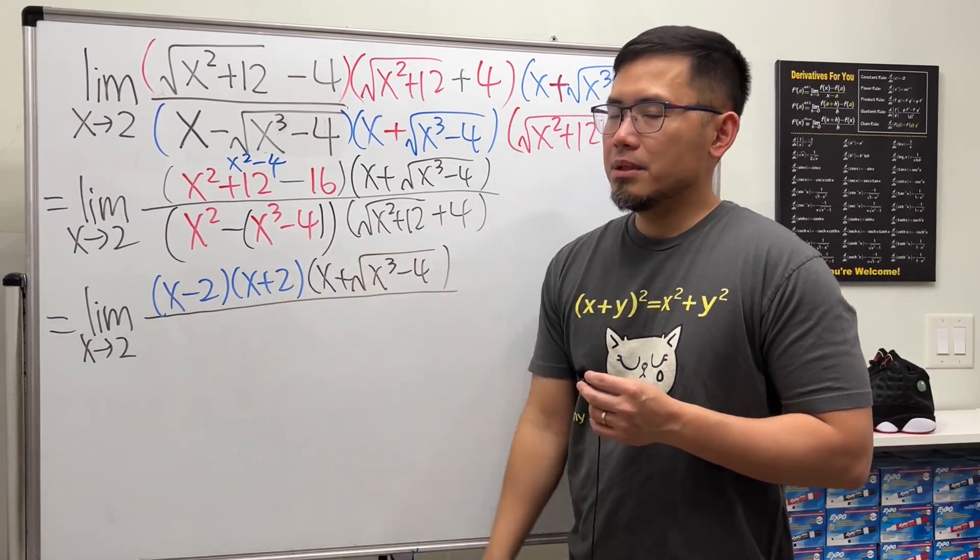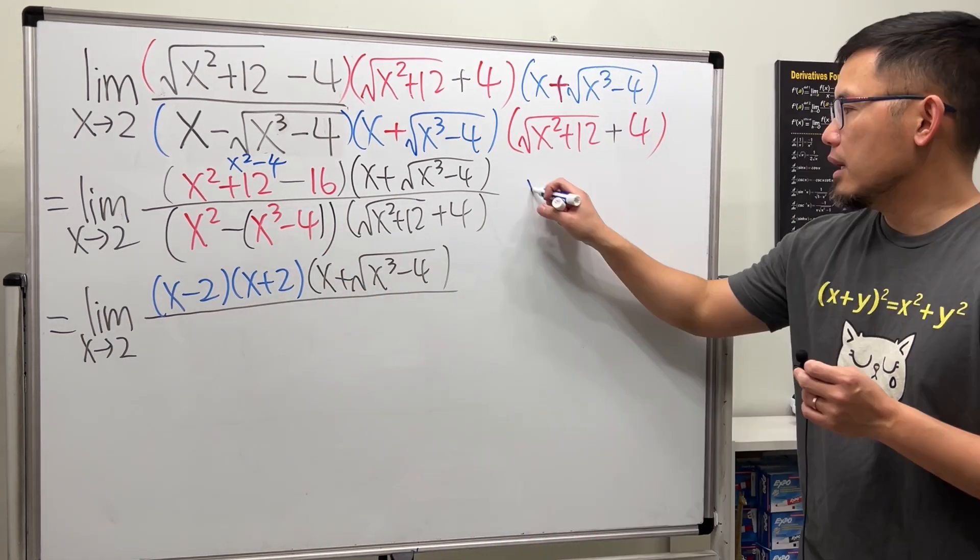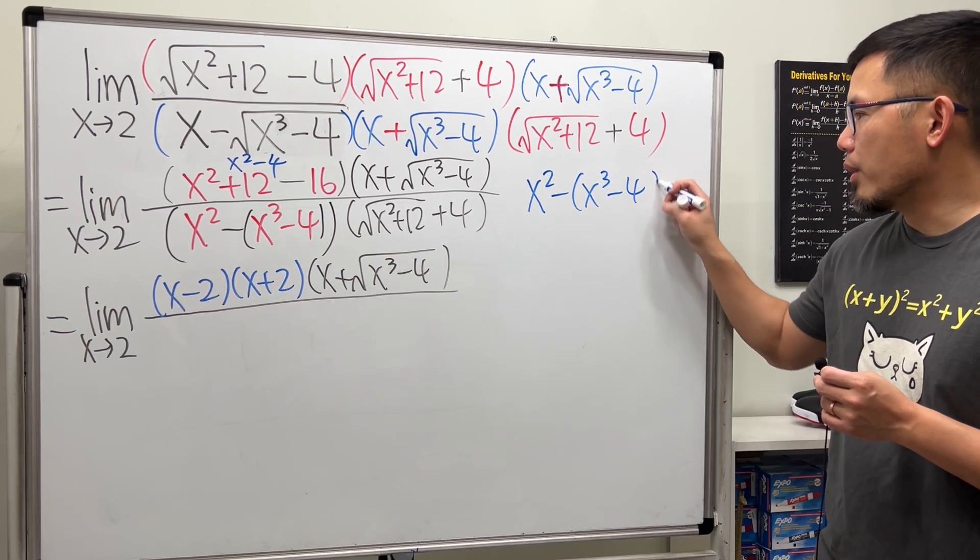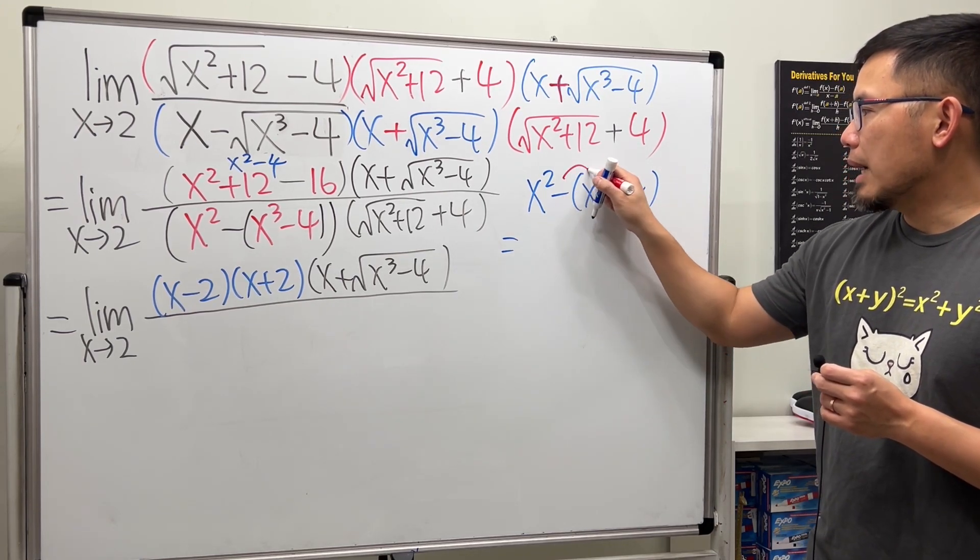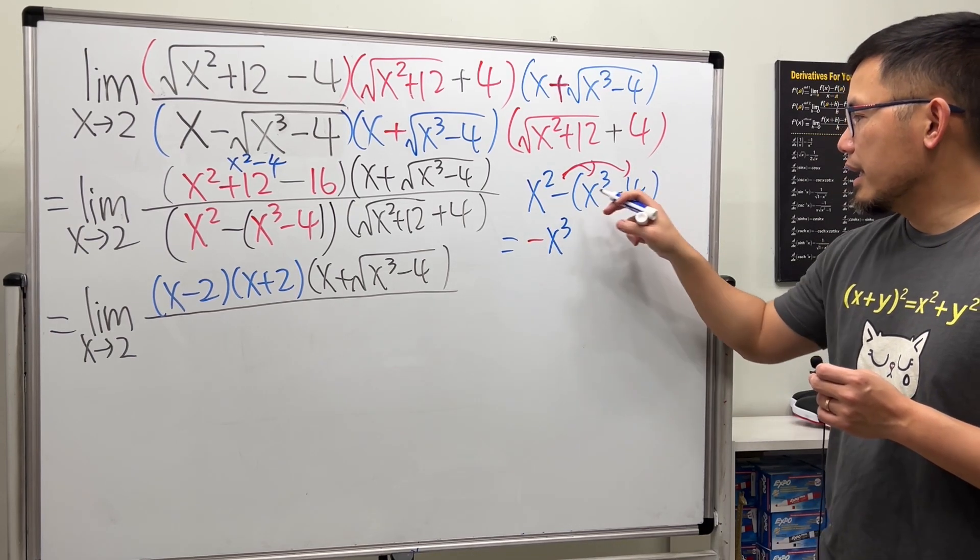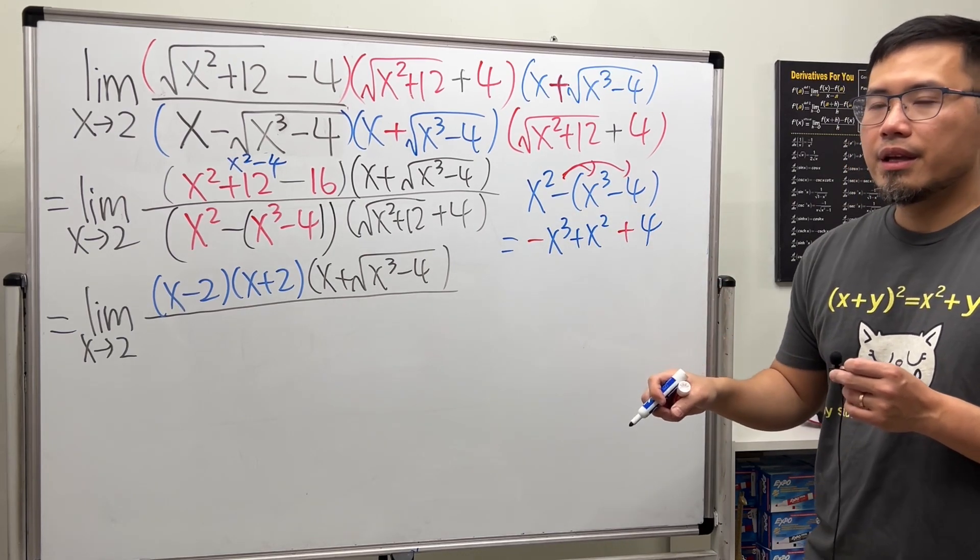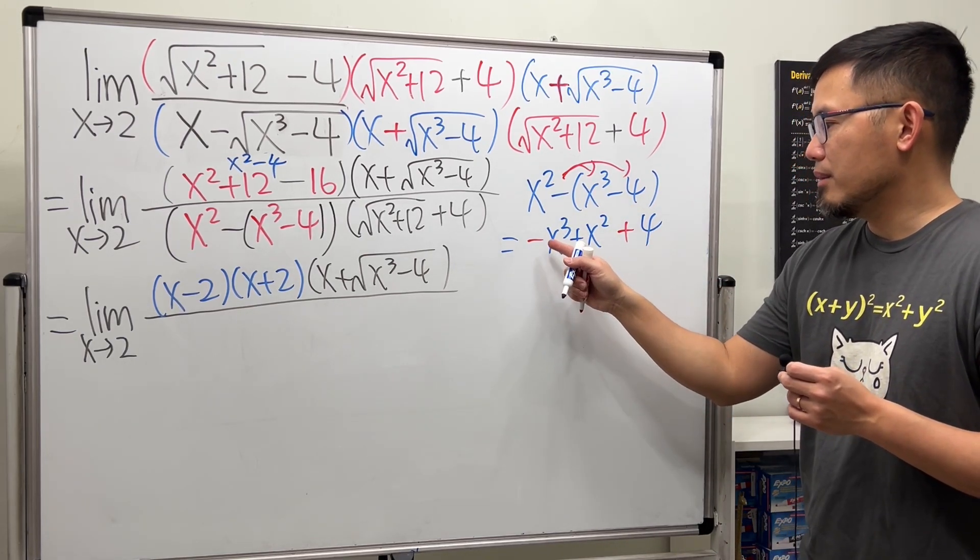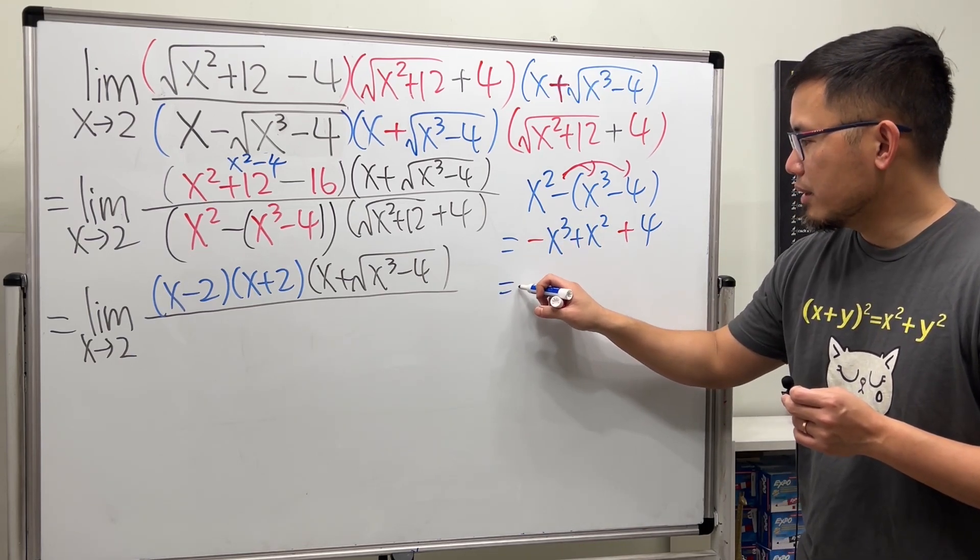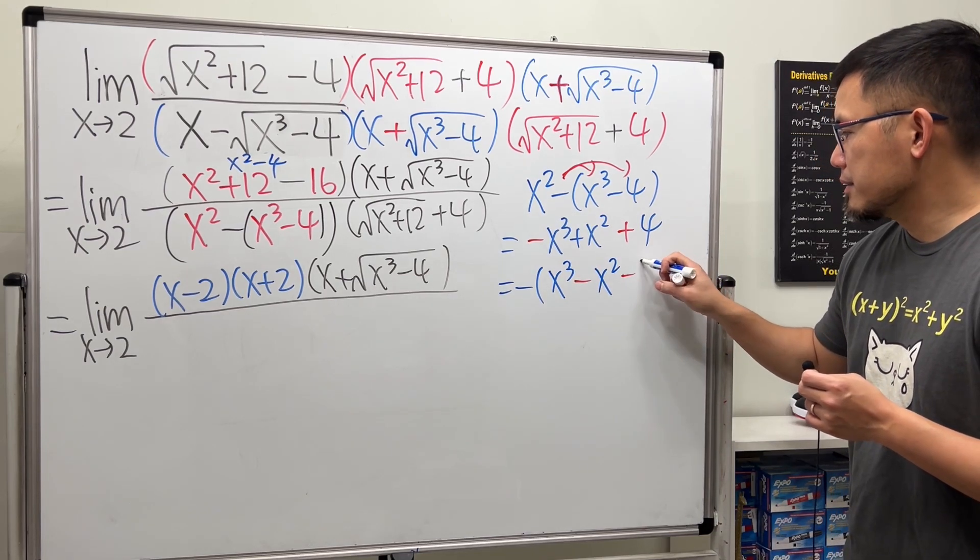Now for the bottom, it's trickier, because how do we factor things like this? I will do it on the side for you guys. x squared minus parentheses x to the third power minus 4. Distribute the negative. And perhaps let's put it down first. So we have negative x to the third power and then plus 4. And then put down a plus x squared here. And usually we like to have a positive leading term, right? So let me factor out negative right here. And then we get x to the third power minus x squared and then minus 4.